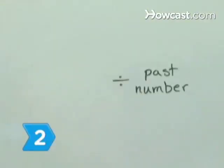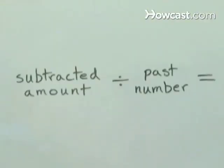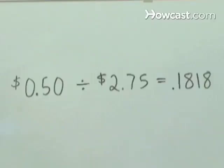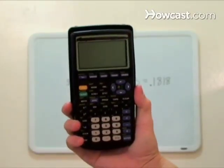Step 2. Divide the past number from the subtracted amount. From the earlier example, divide 50 cents by $2.75 to equal .1818. Use a calculator if your division skills need sharpening.